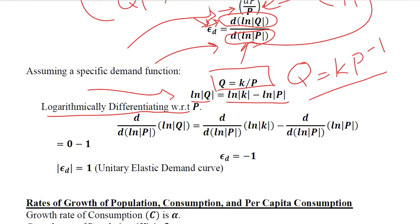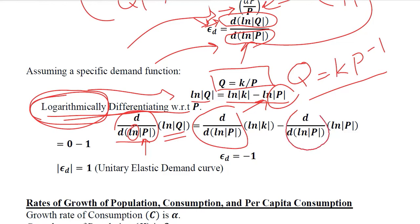If we differentiate this function, it would be with respect to P. But P is appearing with a natural log. Therefore, we logarithmically differentiate the function with respect to P. Here you can see the natural log appearing because it is natural logarithmic differentiation. We write d(ln(Q))/d(ln(P)). This is the function we are differentiating.